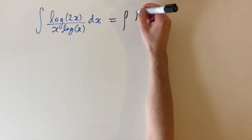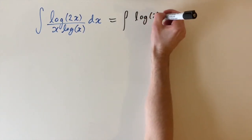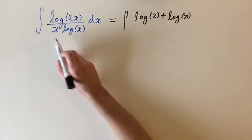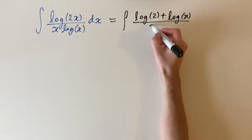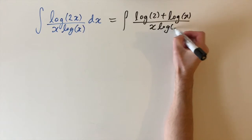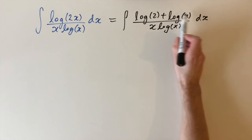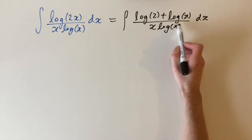And this gives us an integral of log of 2 plus log of x on the top. And we still have the denominator, so we still have x log x on the bottom and dx. So you can see why we did this now, because one of the terms is going to cancel with the log on the bottom.